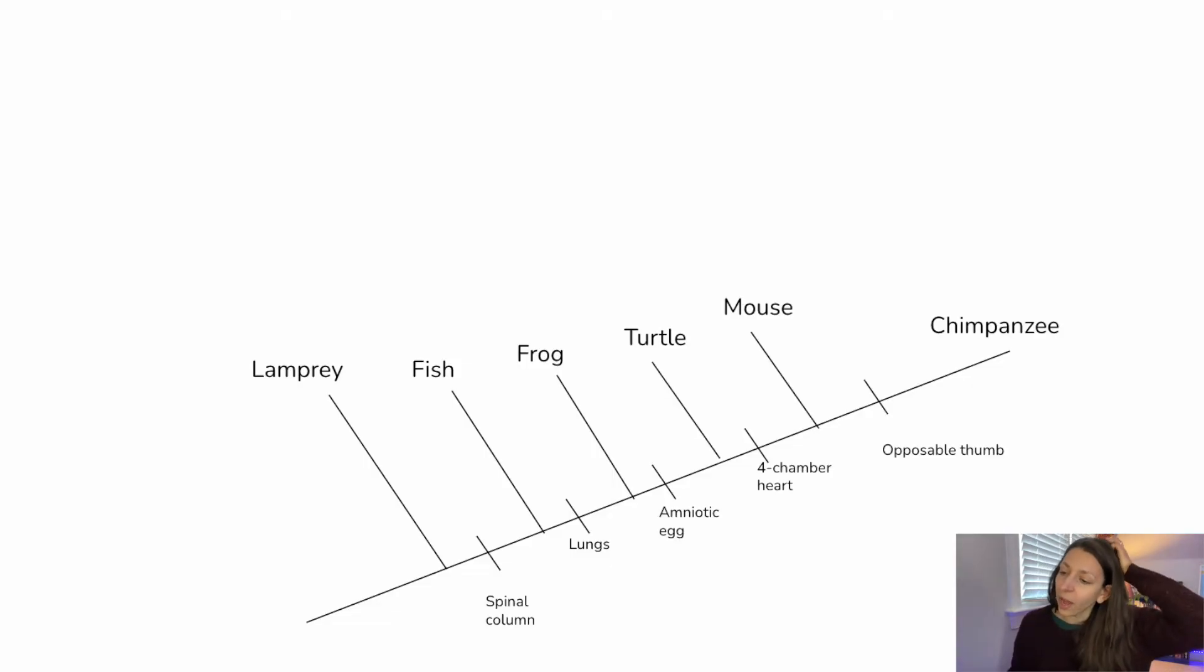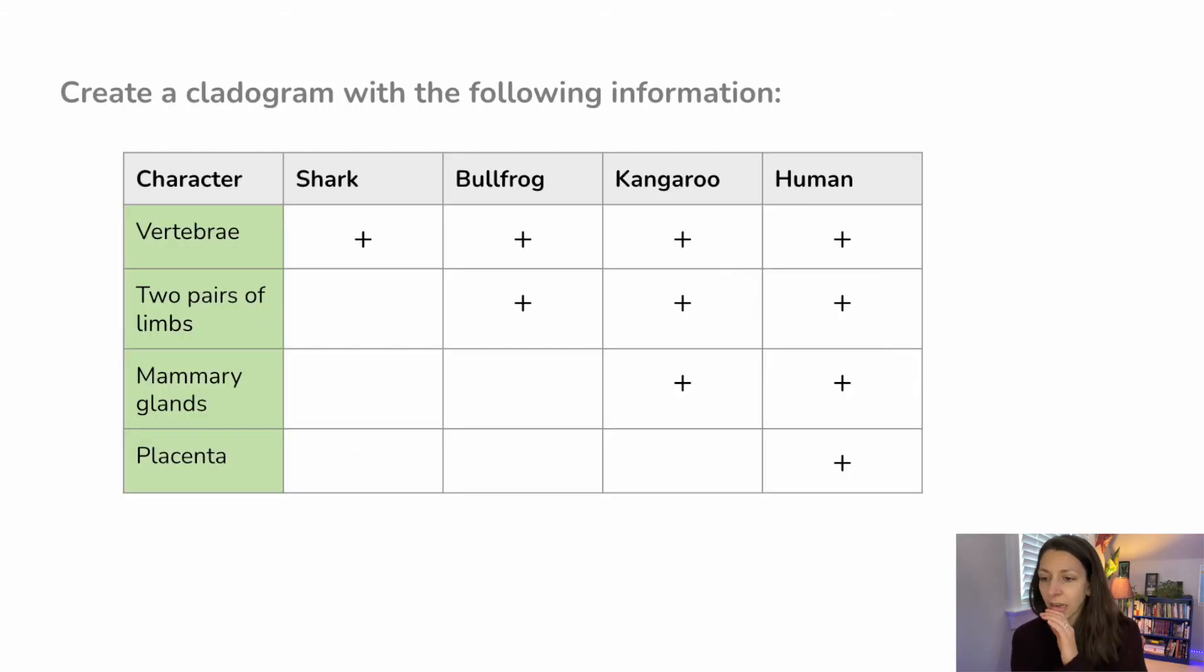And then the rest of them come this way on the tree. Now remember, if we flip this and you had it going in the opposite direction, that's okay. As long as all the branching patterns still match up, you did this right. All right, here's another one.